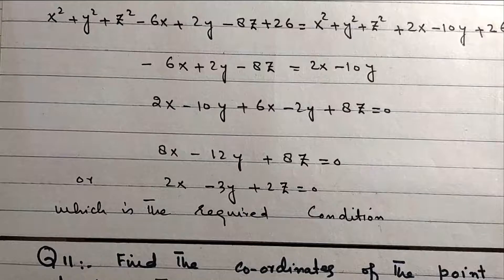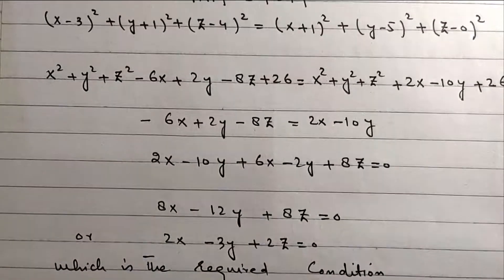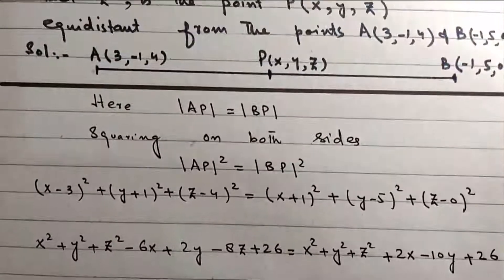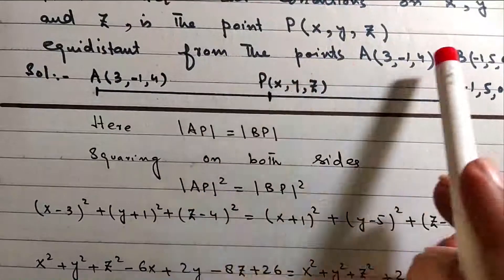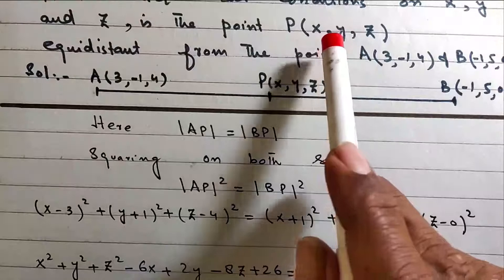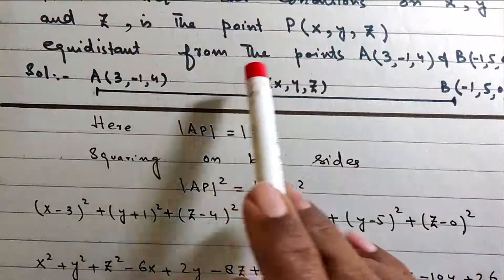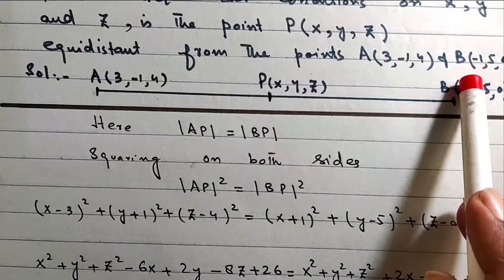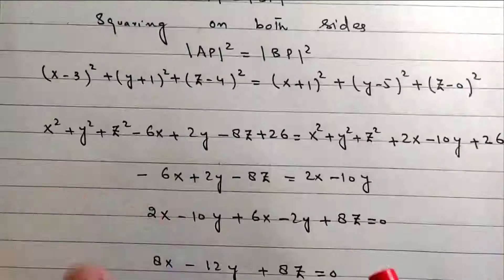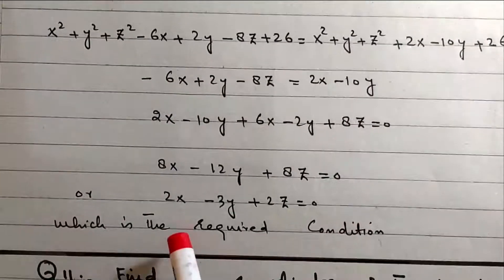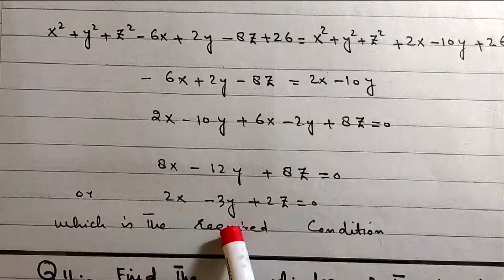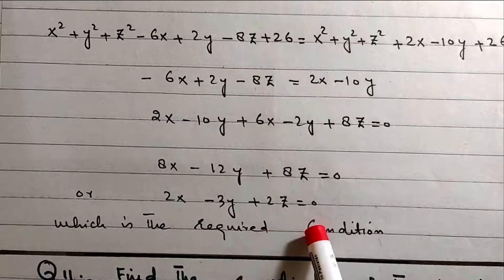Under what condition on xyz — this is the required condition when xyz satisfies equidistance from the points A and B. This condition is: 2x minus 3y plus 2z is equal to 0.